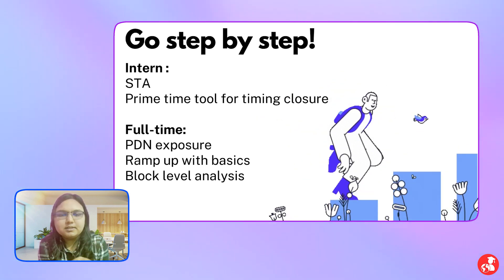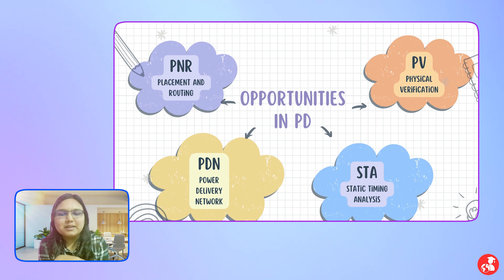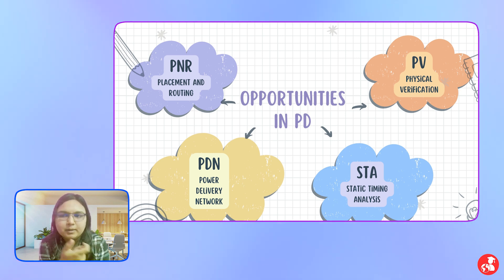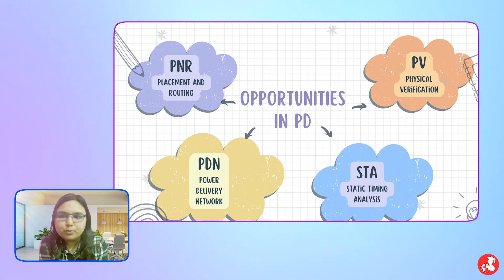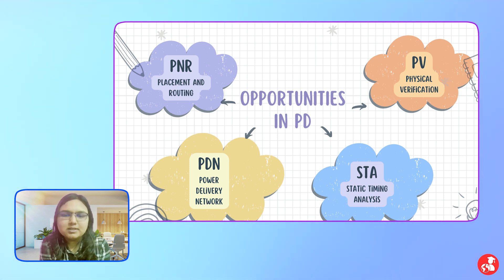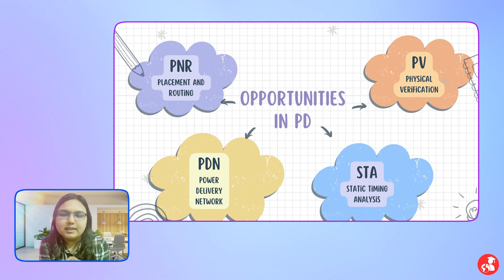Coming to the opportunities in physical design—at my company there are four sub-teams: P&R team, PDN team, SPA team, and PV team. The P&R team deals with synthesis, placement, routing, and floor planning. Once routing is done and the design is ready at a raw level, the design parallelly goes to the SPA team and the PDN team, where they start their analysis on timing criteria or power and IR criteria.